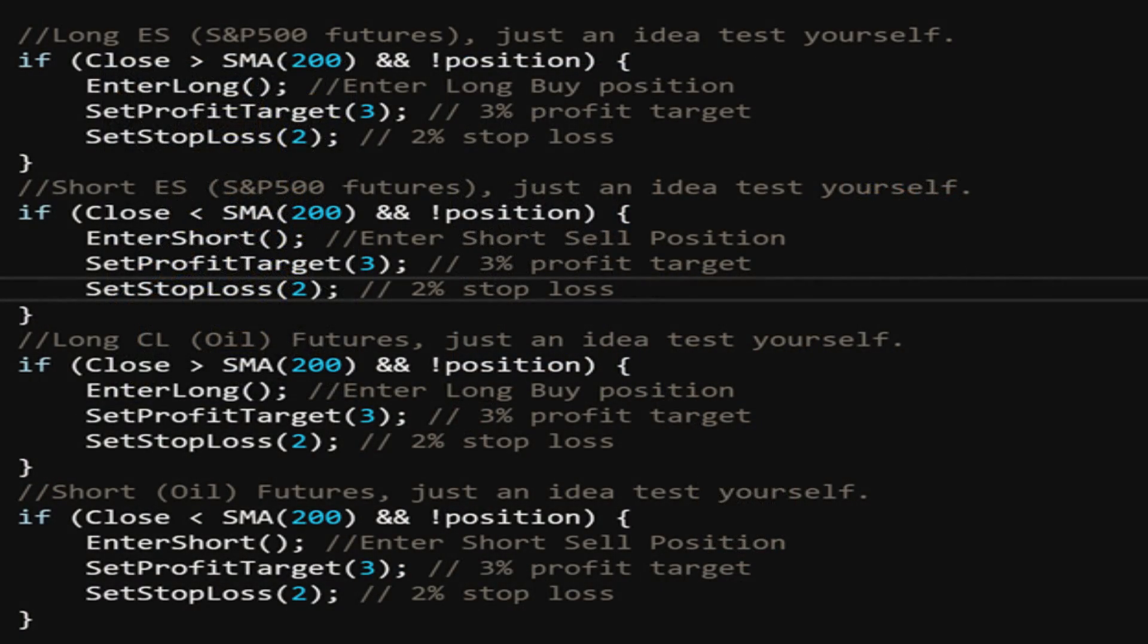Here are some pseudo code C# examples of the four strategy ideas we have. Long and short for both ES and CL. The long is: if the close is greater than the 200 SMA or simple moving average, we're going to enter long. We're looking for an uptrend, right, with a 3% profit target and a 2% stop loss.